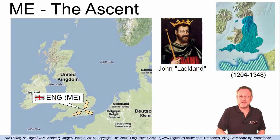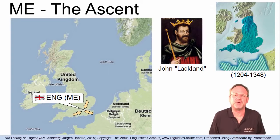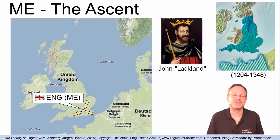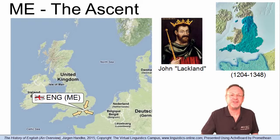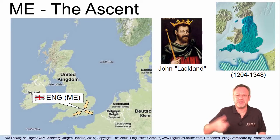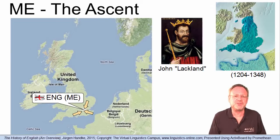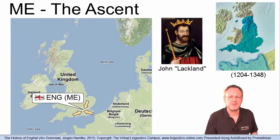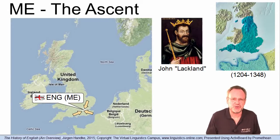The year 1204 marks the turning point when King John, nicknamed John Lackland, lost his English possessions in France, leading to a gradual decline of French as an official language in England. By the 13th and 14th centuries, even the children of the English nobility no longer learned French as their native language. English had become the new medium of instruction.